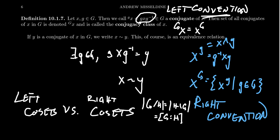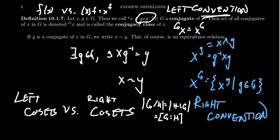These notations are derived from the fact that we write functions on the left. In the United States the most common way of writing a function is f(x), where the function is on the left and the input is on the right. In other parts of the world it's actually common to write the function on the right — like x superscript f. So the element g is acting like a function on the input element x.